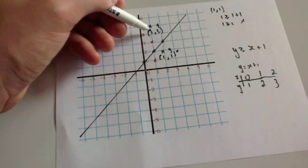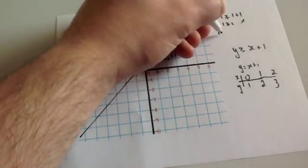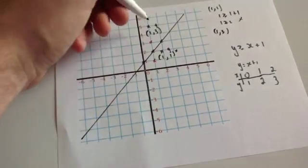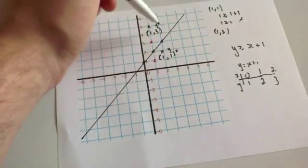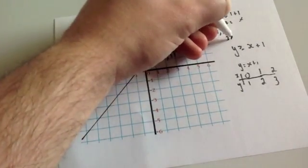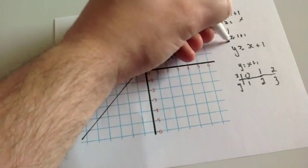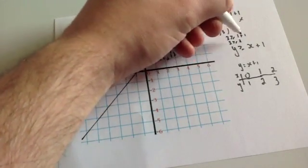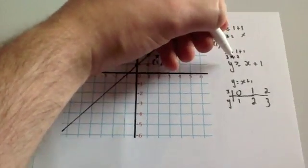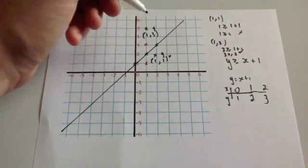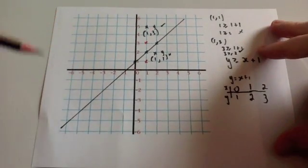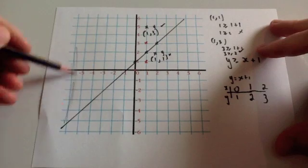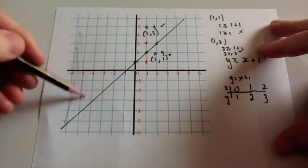Let's try the coordinate (1,3): x is 1, y is 3. So putting them in: y is bigger than or equal to x plus 1, so 3 is bigger than or equal to 1 plus 1, that's 3 is bigger than or equal to 2 — well, it is. So that one works and this one doesn't. So we're going to shade in the region that satisfies the inequality — the whole top section, like so.